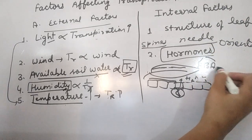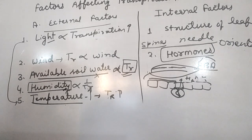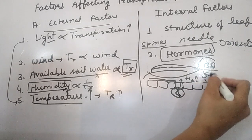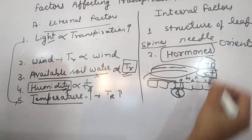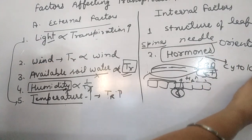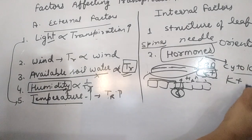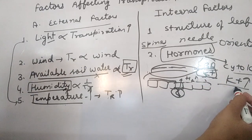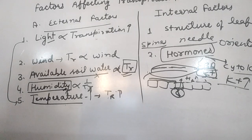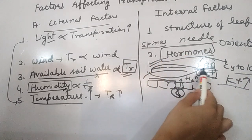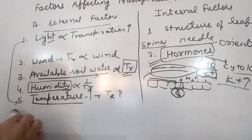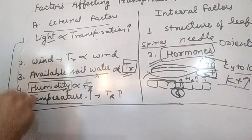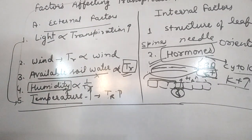Hormones also affect transpiration. Potassium influx promotes stomatal opening and increases transpiration. Abscisic acid (ABA) suppresses stomatal opening and suppresses transpiration. So the transpiration chapter is now completed. Thank you very much — see you in the next video.